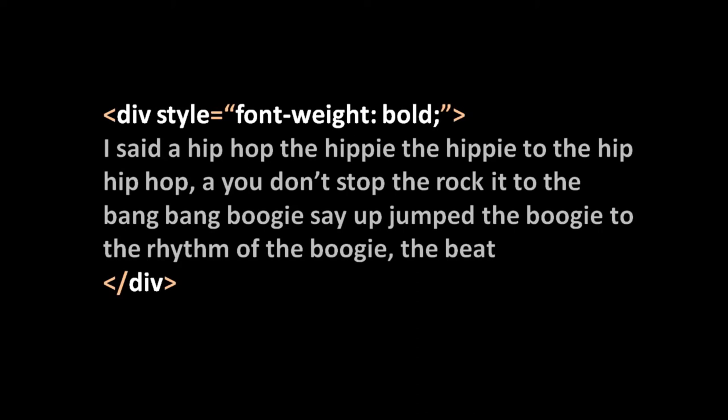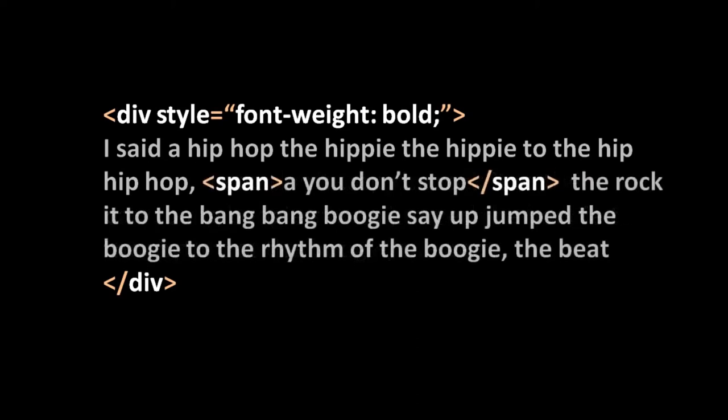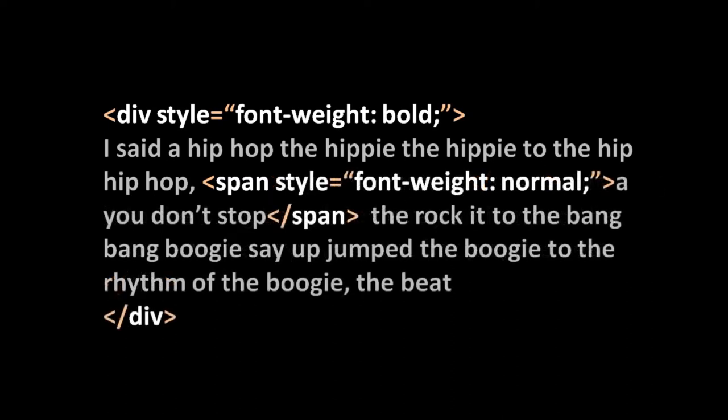For text properties — things like font-weight, font-size, font-style, font-color — those get inherited by the elements within an element. So if we have a span contained within a div, and the div has the bold style applied to it, the span within that div is going to inherit that same property and its text will be bold as well. If we want to change this, we have to apply a contradictory style to the span itself — giving it "font-weight: normal;" so it's no longer bold.